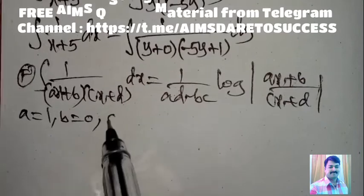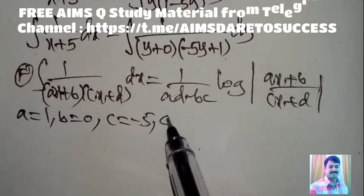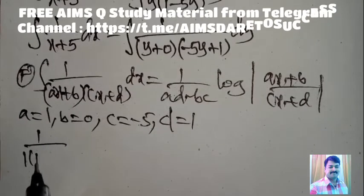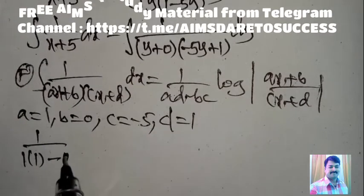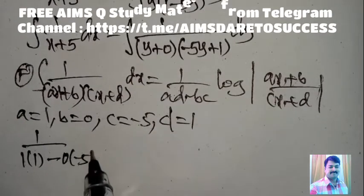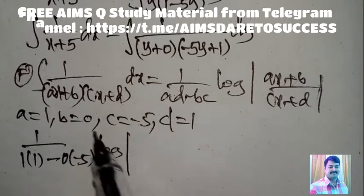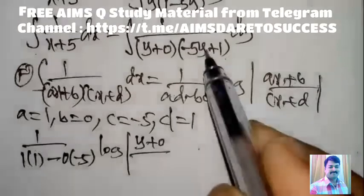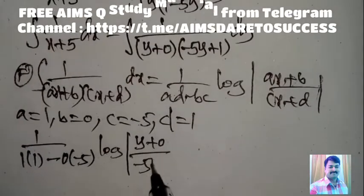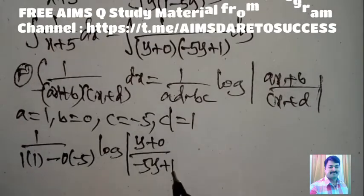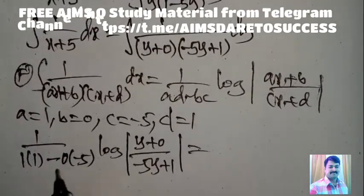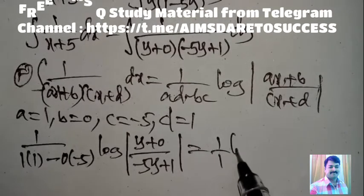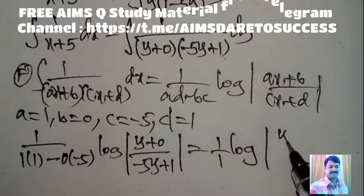Here a = 1, b = 0, c = −5, d = 1. Substituting: 1/(ad − bc) = 1/(1×1 − 0×(−5)) = 1/1 = 1. So we get log|(y + 0)/(−5y + 1)|.